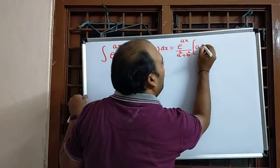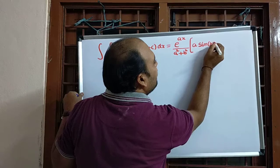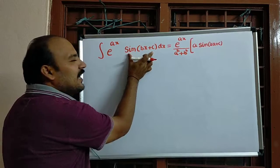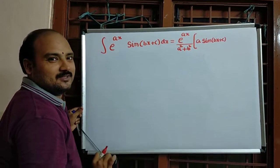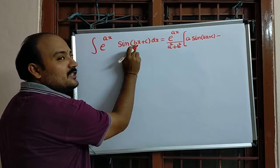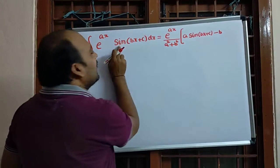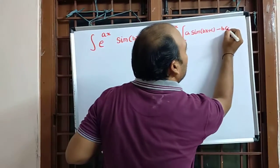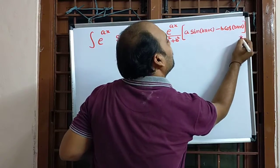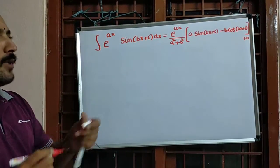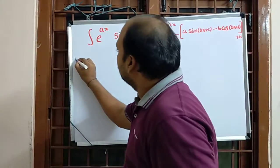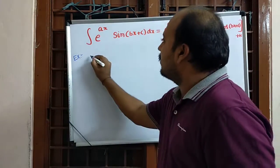Inside the bracket: the x-coefficient 'a' multiplied by sin(bx + c), then minus (since the integral of sin is minus cos), followed by the x-coefficient 'b' multiplied by cos(bx + c), plus constant k. That is how you remember this shortcut formula.